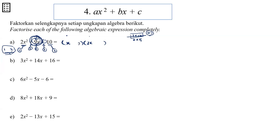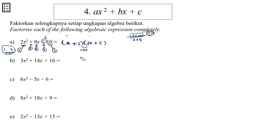Next, we try with 2 and 5. Put 2 here and 5 there. Check the inner pair: 4x. Check the outer pair: 5x. We are supposed to plus them. So 4x plus 5x — do I get 9x? Yes! This is what we want. And since we are adding and the last term is positive, both signs must be positive. So positive 2 times 2x gives 4x, and x times positive 5 gives 5x. This is the correct factorization.